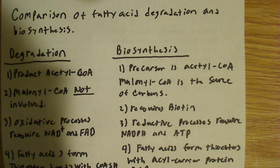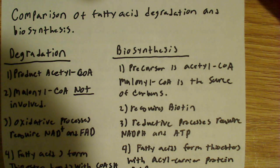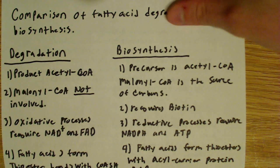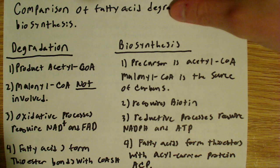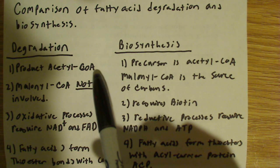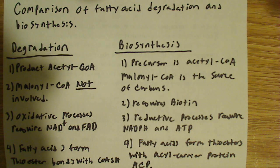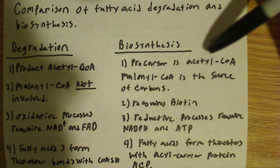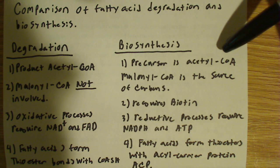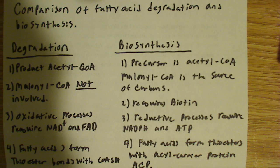I want to do a comparison of fatty acid degradation and biosynthesis. Beginning with degradation, the product of fatty acid breakdown or beta-oxidation is acetyl-CoA, and that enters the TCA cycle. In biosynthesis, the precursor is acetyl-CoA, but it's actually the malonyl-CoA molecule that is the source of the carbons.